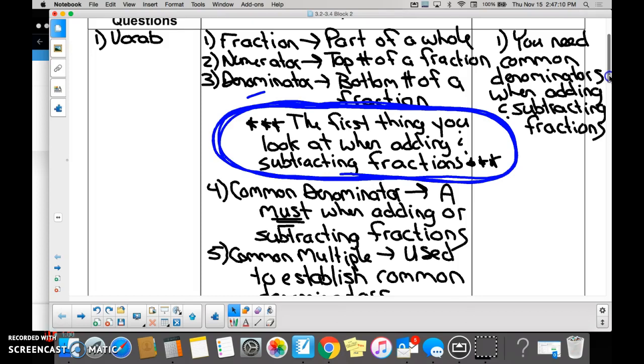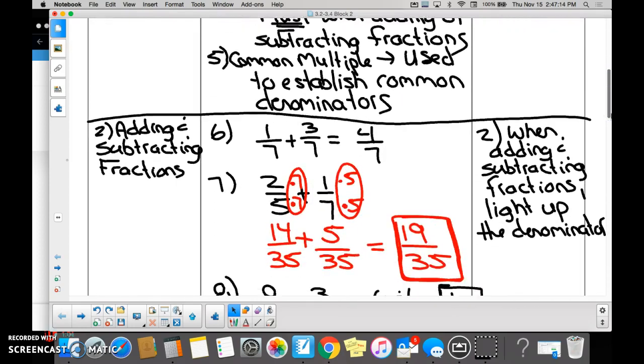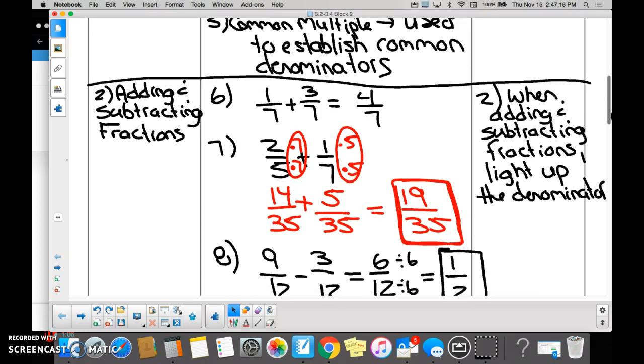Number six is one-seventh plus three-sevenths. Are the denominators the exact same? So all we do is add, right? And we only add the numerator. So what's one plus three? So the answer is four-sevenths. Yes.